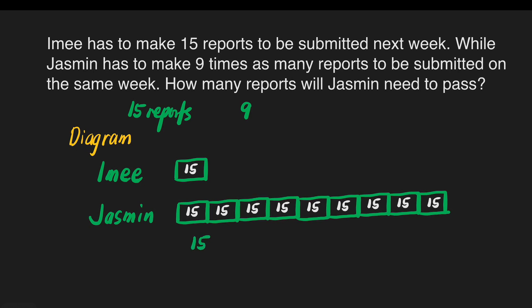15 times 9: 9 times 5 is 45 — write 5, carry 4. Next, 9 times 1 is 9, plus 4 is 13. So all in all, Hasmin has to make 135 reports to be passed next week.